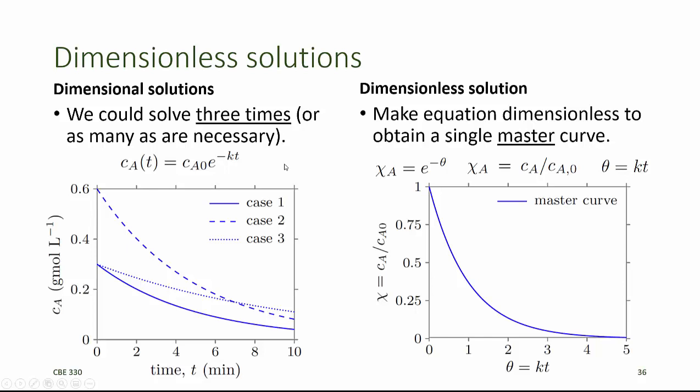We'll also make the time dimensionless by defining the parameter theta, which is the product of the reaction rate coefficient and time, Kt. Our solution now becomes chi A equals e to the minus theta, where chi A, E, and theta are all dimensionless.